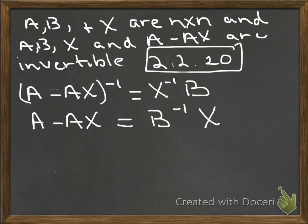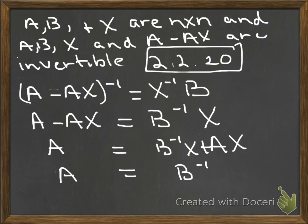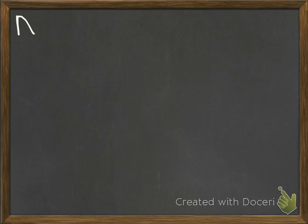I have A minus AX equals B^(-1) times X. I'm trying to solve for X, so I'm going to collect the terms together with the X. I'm going to get A is equal to B^(-1)X plus AX, or this is equal to (B^(-1) + A) times X.